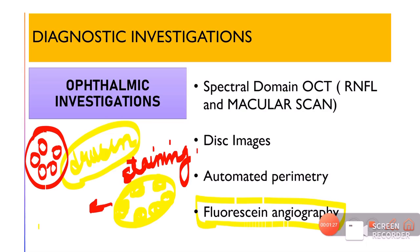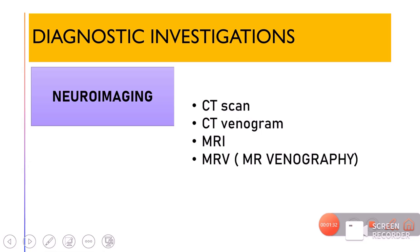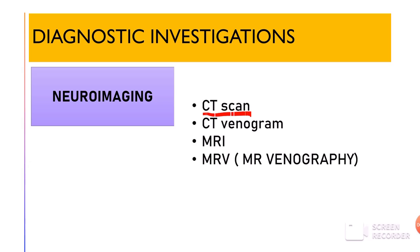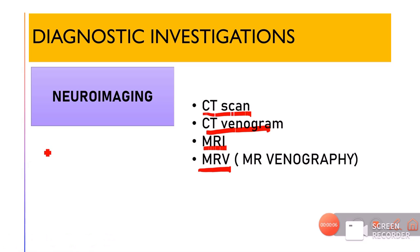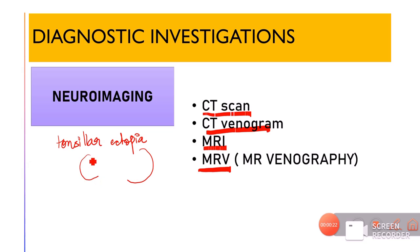Neuroimaging investigations for papilledema include an urgent CT scan to rule out space-occupying lesions. CT venogram can rule out cerebral vein thrombosis. MRI and MRV with contrast can be done when meningitis is suspected. An important finding to rule out on neuroimaging is tonsillar ectopia — where the cerebellar tonsils are present below their normal location in close relationship to the foramen magnum.